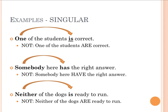Welcome back. Let's see some of these in action. 'One of the students is correct.' The true subject is 'one,' not 'students.' Even though 'students' is close to the verb, it's in the prepositional phrase, so it cannot be the grammatical subject. 'One' is singular and takes the singular verb 'is.' 'Somebody here has the right answer' — subject is 'somebody,' which is singular, so the verb is 'has.' 'Neither of the dogs is ready to run' — 'neither' is the indefinite pronoun, it is singular, and takes the singular verb 'is.'